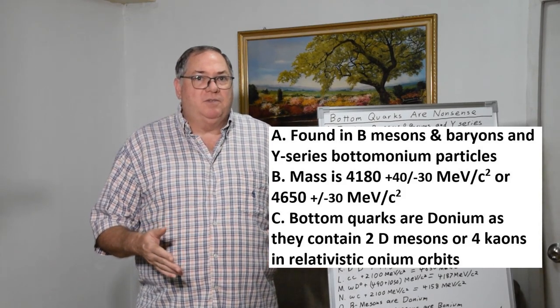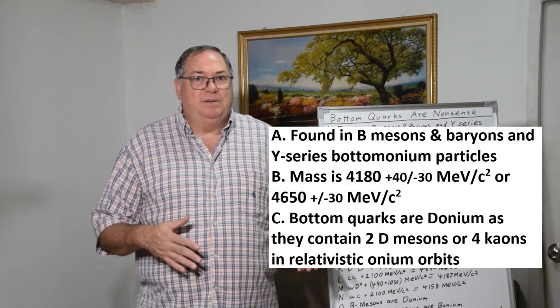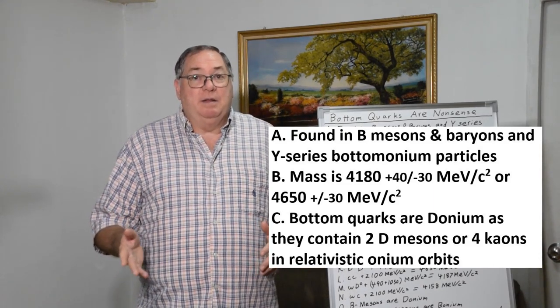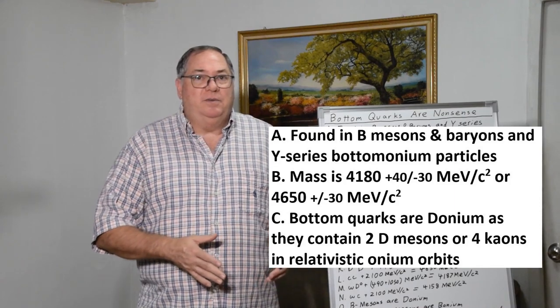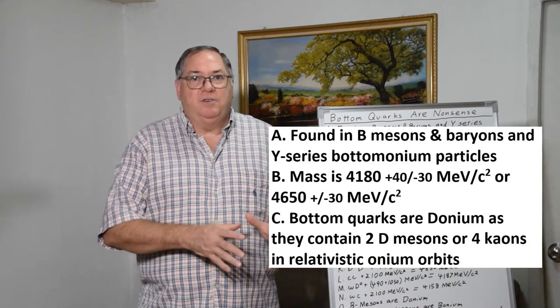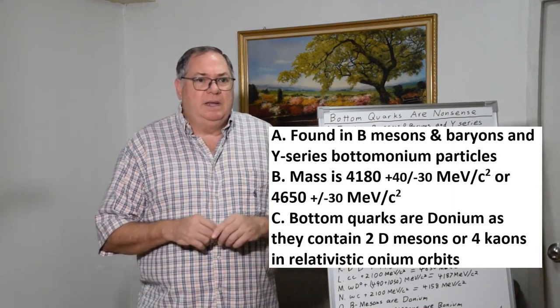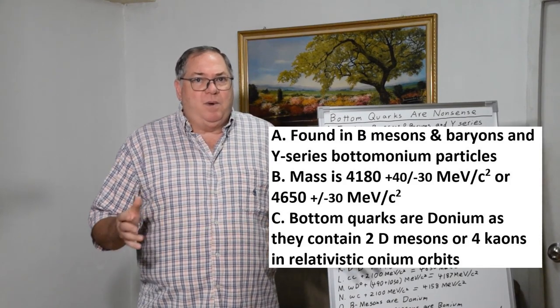In onium theory it goes from about 2500 up to 6500, plus you can add additional mass in a central particle that's being orbited, so it's quite a wide range.